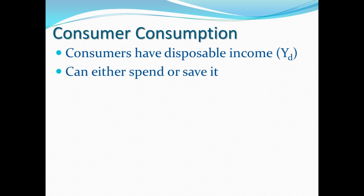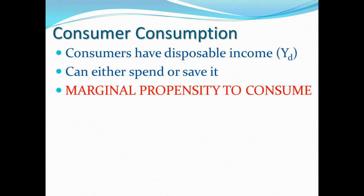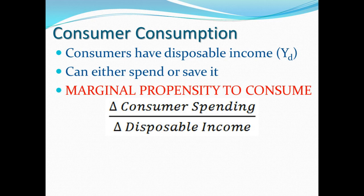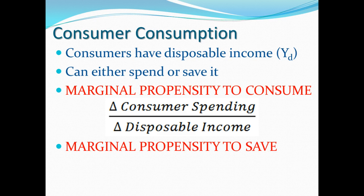With every dollar you earn, we can talk about the marginal concept — how much more given one more unit. In the case of spending, how much more spending do you do for an additional dollar received? That's the marginal propensity to consume, defined as the change in spending over the change in disposable income. The opposite of spending is saving, called the marginal propensity to save — the change in saving given a change in income.